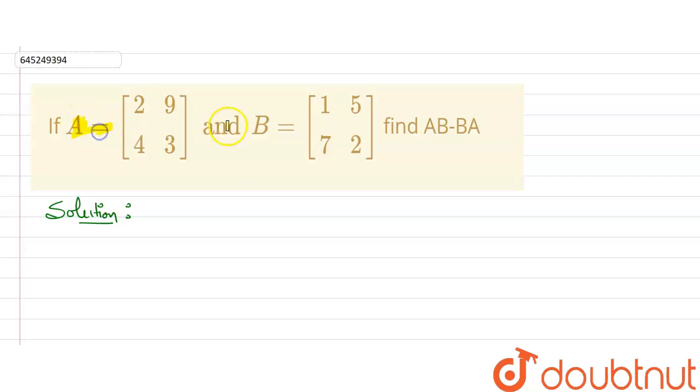Hello everyone, in this question a matrix A and a matrix B is given to us. Order is 2 cross 2, both order are same. Then we need to find AB minus BA.